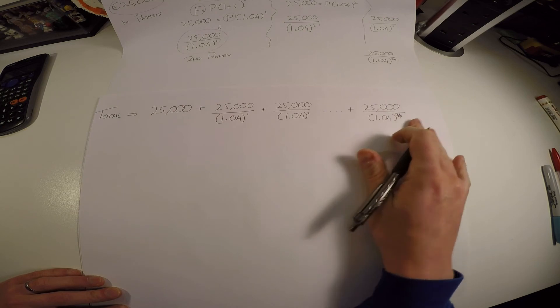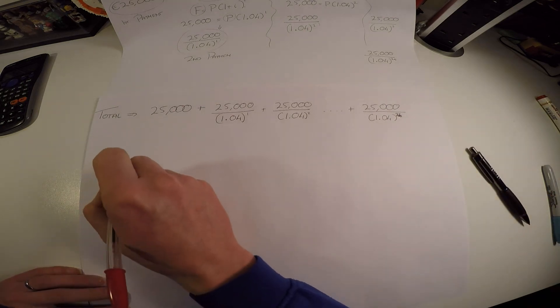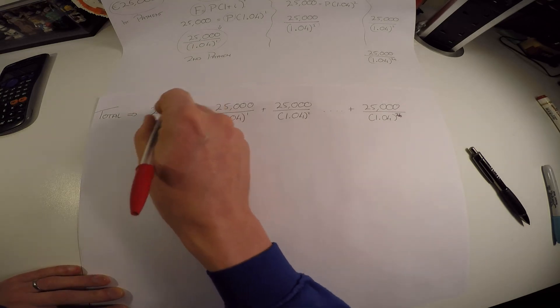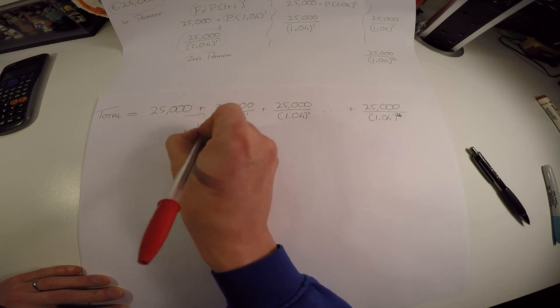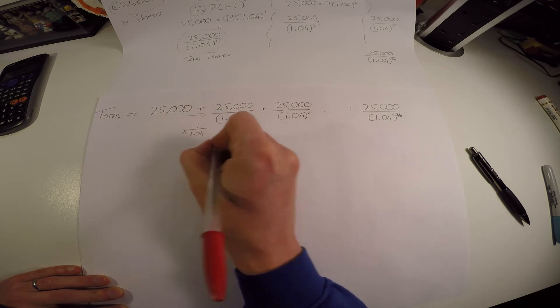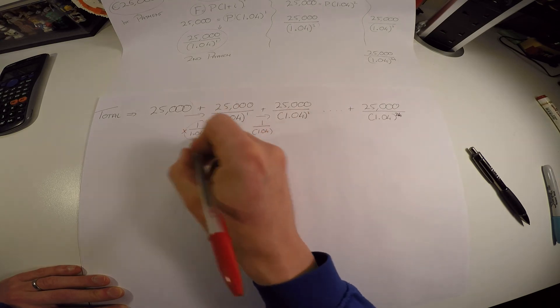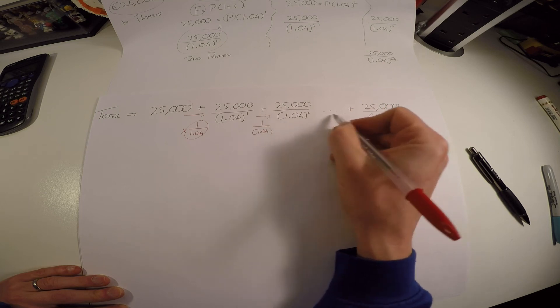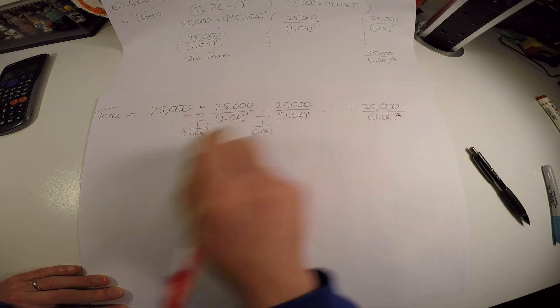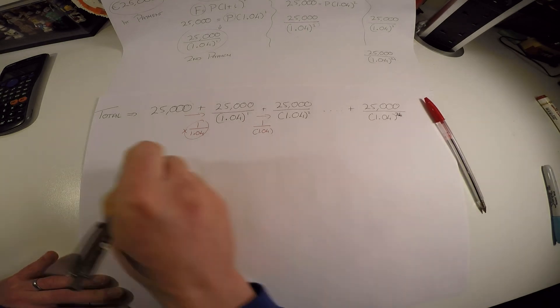So this is what I have: I have 25 terms and they are separated by—is there a ratio here? There is. What do I multiply this by to get this term here? Well, that's a multiplication of 1 over 1.04 to get to this term. That's also a multiplication of 1 over 1.04, and they're all separated by 1 over 1.04 because that brings up the square, up the cube, and so on. But 25,000 on top never changes. So we actually do have this common ratio here.